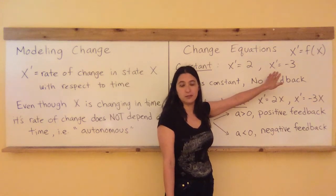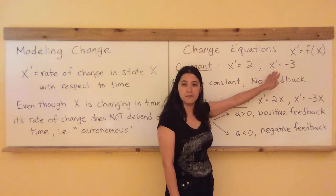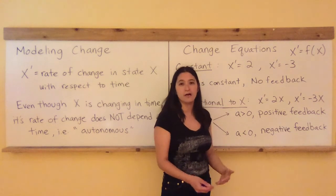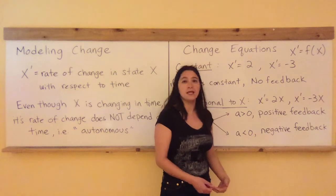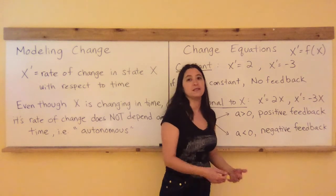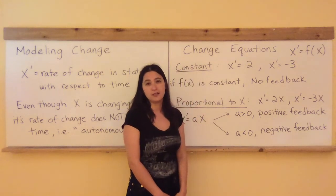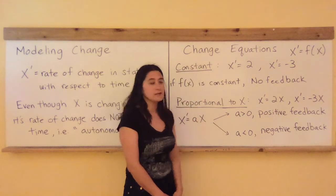So it will go 12, 9, 6, 3, 0, and it might even go negative 3, negative 6, and continue going down forever and ever depending on the domain of your state X.